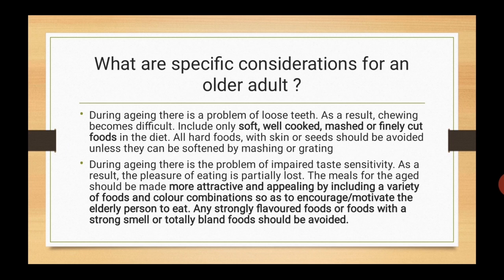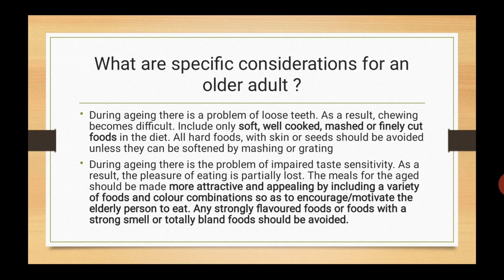Specific considerations for an older adult: due to loose teeth, chewing becomes difficult, so include only soft, well-cooked, mashed or finely cut foods in the diet. All hard foods with skin or seeds should be avoided unless they can be softened by mashing or grating. Due to impaired taste sensitivity, the pleasure of eating is partially lost — meals for the aged should be made more attractive and appealing by including a variety of foods and color combinations to encourage the elderly person to eat. Any strongly flavored foods, foods with a strong smell, or totally bland foods should be avoided.